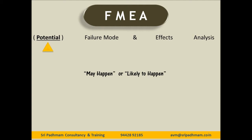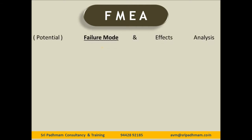The word 'potential' means may happen or likely to happen. For example, a size may become oversize or undersize. A particular size being analyzed must be analyzed in both ways — as may become oversize or undersize. Potential means may happen or likely to happen. The next keyword is 'failure mode.'